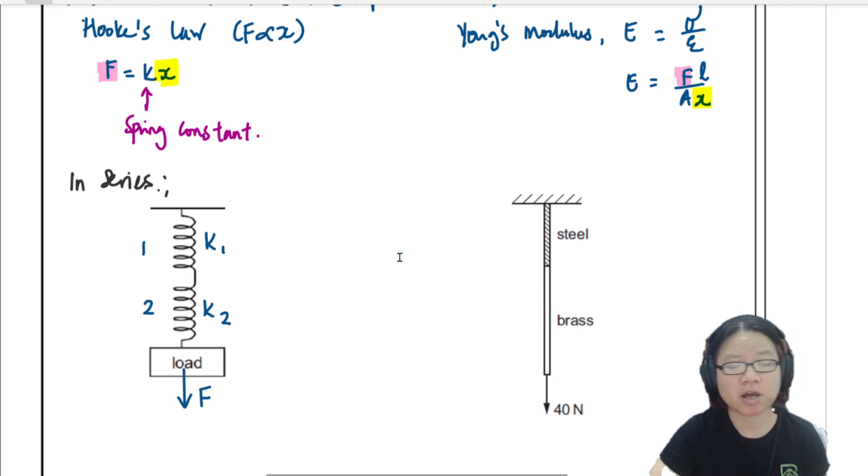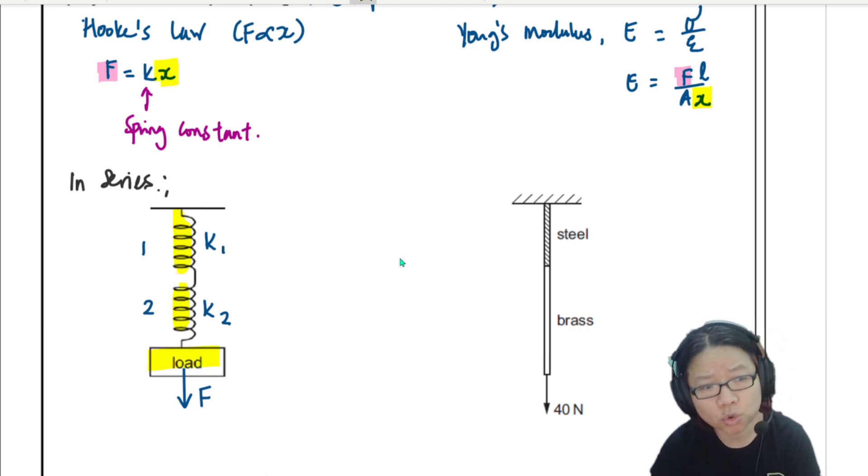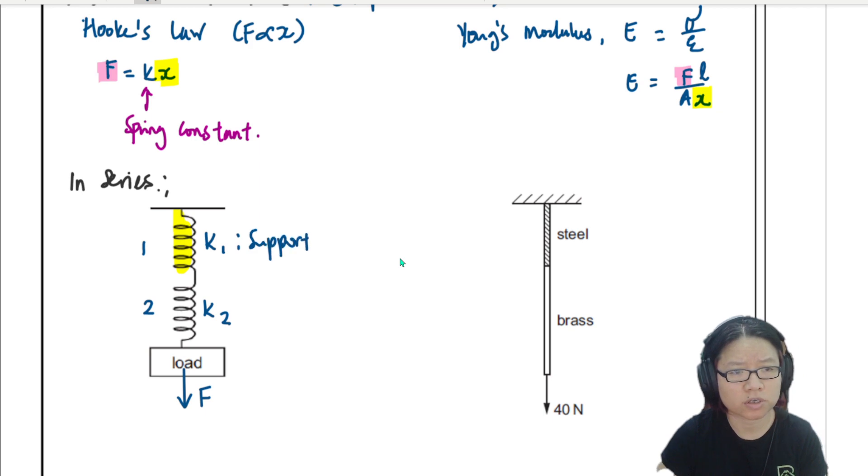So the important thing to understand here is if let's say you are spring one, what are you supporting? You are supporting spring two and the load. So the first idea here is spring one supports the load and spring two. But I'm going to assume that the weight of spring two is negligible.